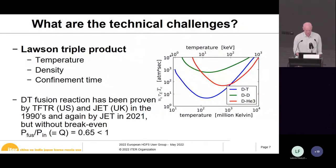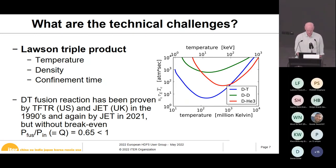There is something called the Lawson triple product, which is a combination of temperature, density, and time. Those conditions have to be obtained for a fusion reaction to happen. Depending on what fuel you use, these conditions differ. The easiest is the reaction between deuterium and tritium — the blue curve — which is why this is the selected fuel. This reaction has already been proven both in the US and UK in the 90s, and again last year at JET in the United Kingdom. However, breakeven — where output energy is larger than input energy, known as the Q factor — has not yet been achieved.